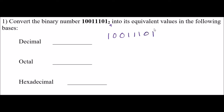In binary, everything is 2 to some power in terms of place value. So the first digit, the least significant bit, is 2 to the 0 power, or the 1s place. This is 2 to the 1st power, or the 2s place. 2 to the 2nd power, or the 4s place. It doubles every time — that's my 8s place, 16s place, 32, 64, 128s place.